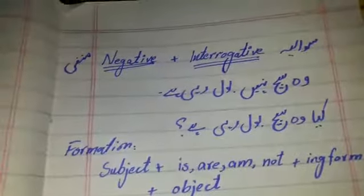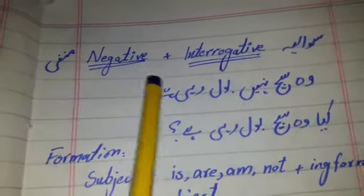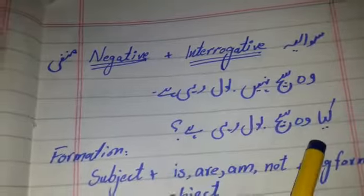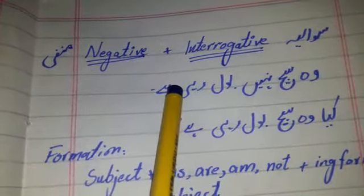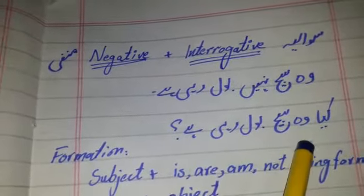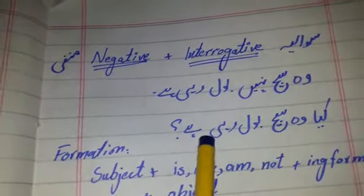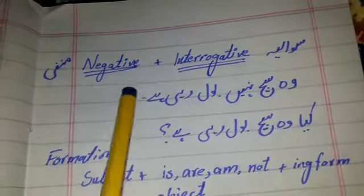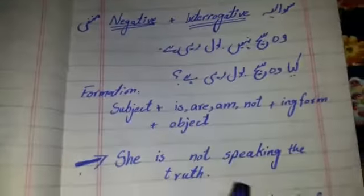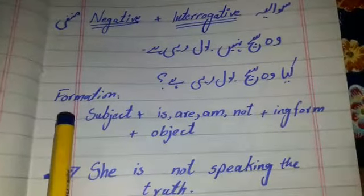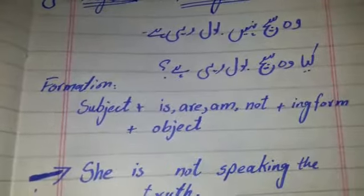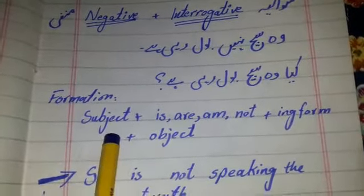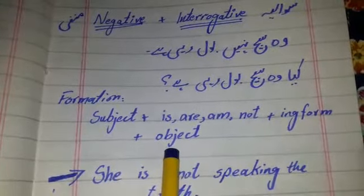Now we have negative and interrogative sentences. Negative means 'manfi' and interrogative means 'savalia.' Like, 'Woh sach nahi bol rahi hai' — rahi hai — that is present continuous but negative because there is use of 'not/nahi.' And 'Kya woh sach bol rahi hai?' — that is interrogative because of 'kya' and the question mark. Present continuous tense means the action is going on but not completed — in fact, the action never gets completed within the sentence.